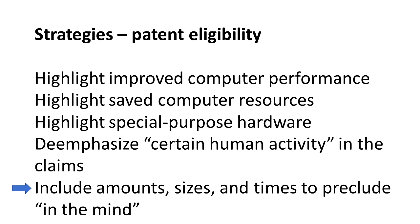So include the number of records, the speed of the processing, the size of the data. Sometimes these things, while they don't necessarily indicate novelty, can help make a case that the invention cannot be performed in the human mind — and sometimes that's important for getting past a 101 rejection.